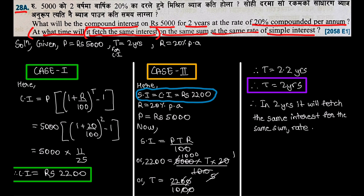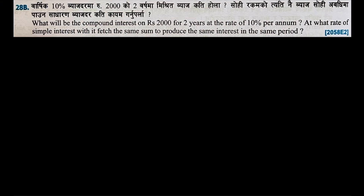Now we have question 28B. What will be the compound interest on rupees 2000 for 2 years at the rate of 10% per annum? And at what rate of simple interest will it fetch the same sum to produce the same interest in the same period? So this time, the unknown is the rate of simple interest.